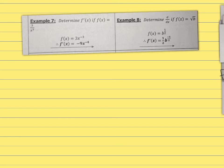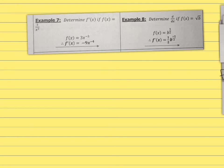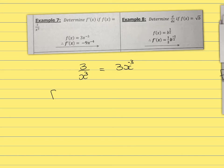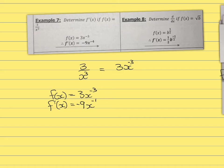Example 7: determine the derivative of f(x) if f(x) equals 3 over x to the power 3. We don't work with fractions, so we rewrite it as 3x to the power minus 3. Then the derivative equals 3 times minus 3, which gives minus 9, and the exponent becomes minus 3 minus 1, which is minus 4.